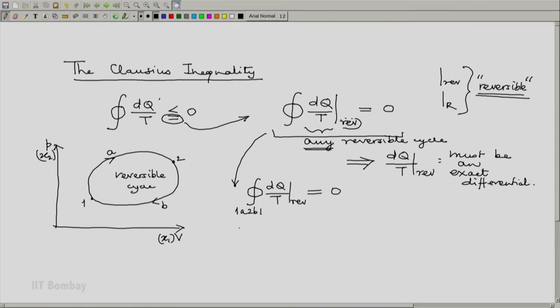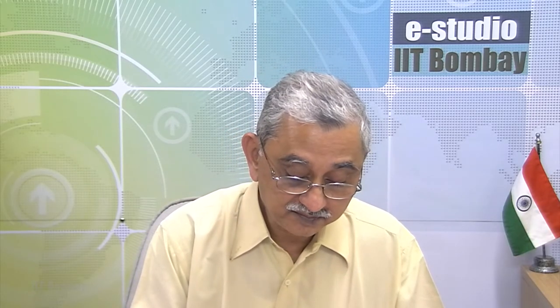But now let us expand this as 1a2 part of the cycle plus that over the second part of the cycle. Let me transpose a term, the second term to the right hand side and I will get.